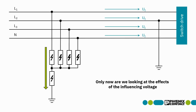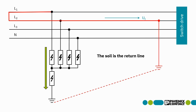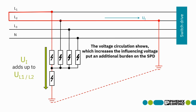The interference voltage is again induced uniformly in all lines, and is only relevant for the voltage circulation for L2. Importantly, no voltage is induced in the ground, which acts as a return conductor. The influencing voltage is added to the face-to-face voltage, and the path from the signal and summation arrestor must be designed accordingly.